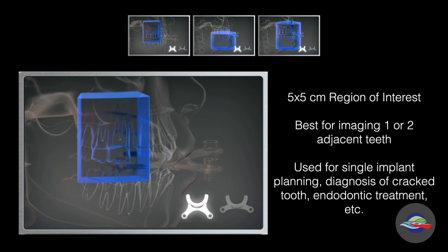The smallest field of view is a 5 by 5 centimeter region of interest. This is used when we're imaging one or two adjacent teeth — often for single implant planning or for the diagnosis of a single cracked tooth to determine if endodontic treatment is necessary, or other scenarios where only one or two adjacent teeth are involved. We use this sized field of view most often in our clinic.